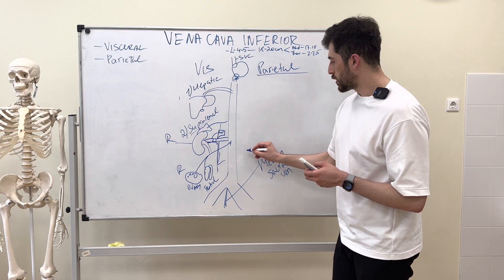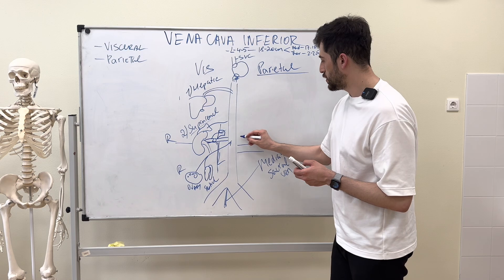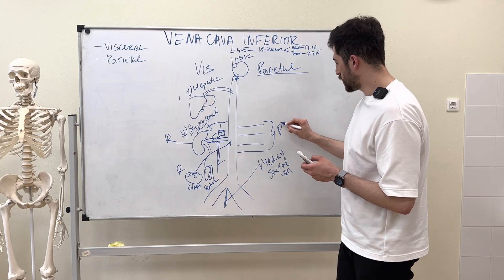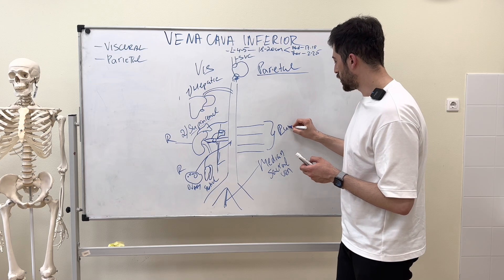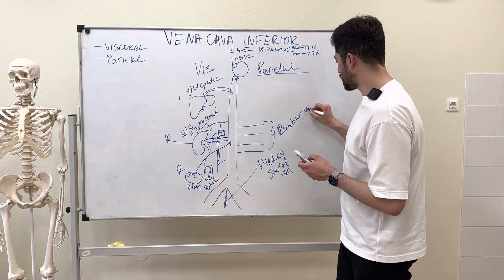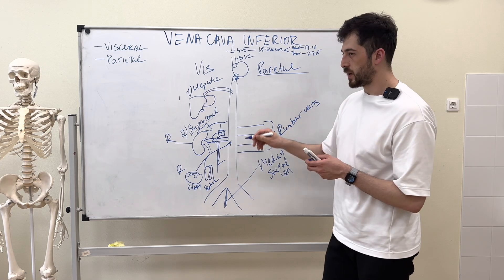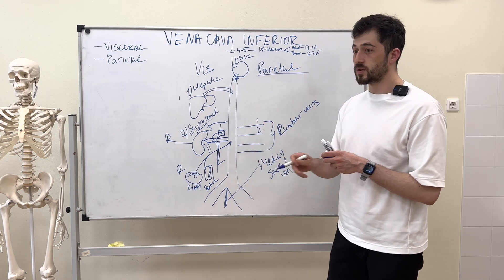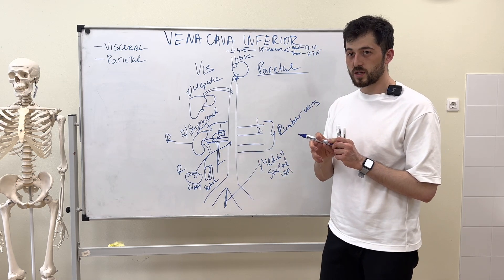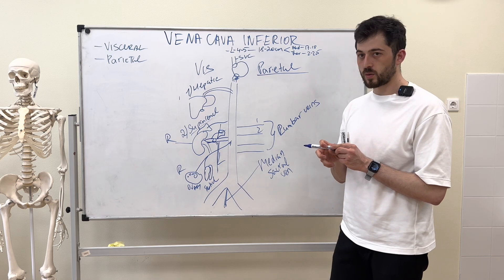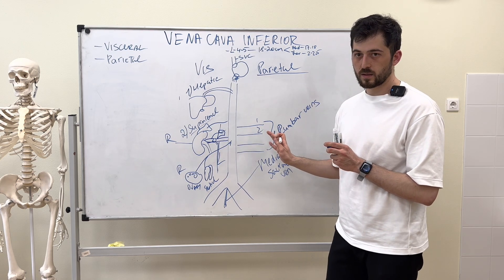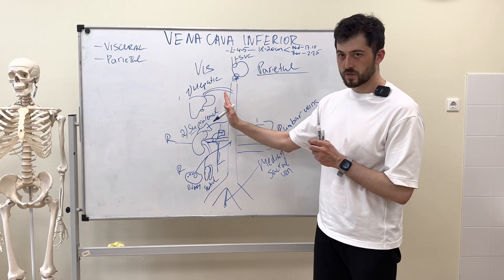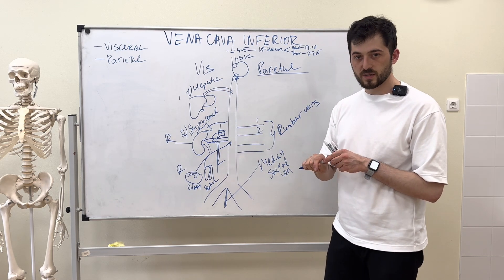The next parietal tributaries are the lumbar veins — there are four pairs. They sometimes form anastomoses; the first and second lumbar veins sometimes drain into the ascending lumbar vein from both the right and left sides, which was a precursor of the azygos and hemiazygos veins.